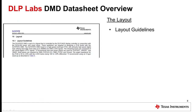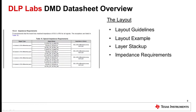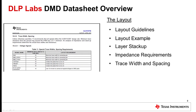Board layout is covered in section 10 of the DMD datasheet. General layout guidelines are described in the first portion. A layout example is then given with a board layer stack-up, impedance requirements, and trace width and spacing requirements.